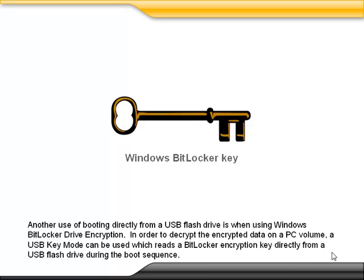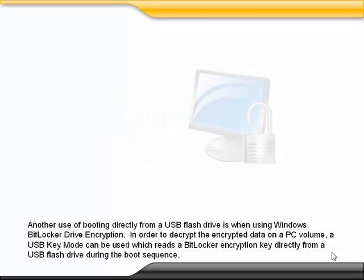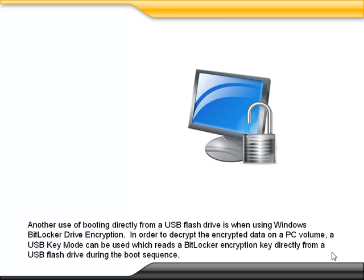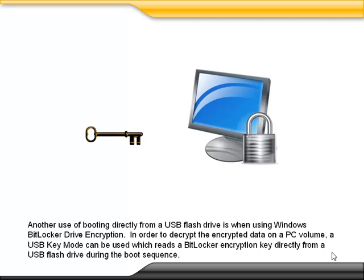Another use of booting directly from a USB flash drive is when using Windows BitLocker drive encryption. In order to decrypt the encrypted data on a PC volume, a USB key mode can be used which reads a BitLocker encryption key directly from a USB flash drive during the boot sequence.